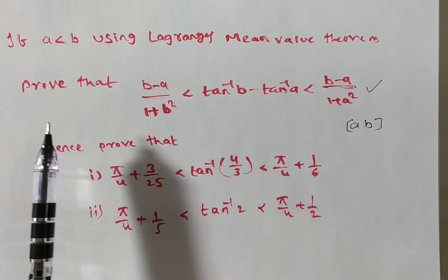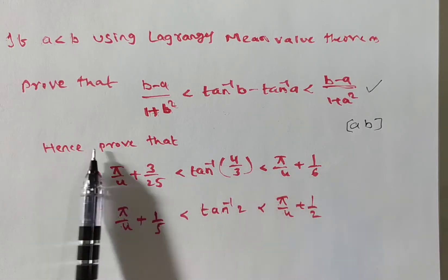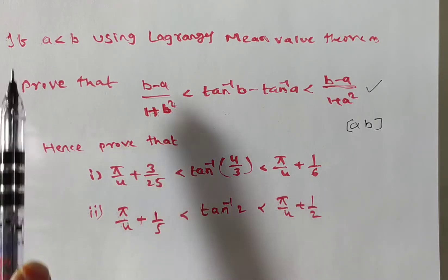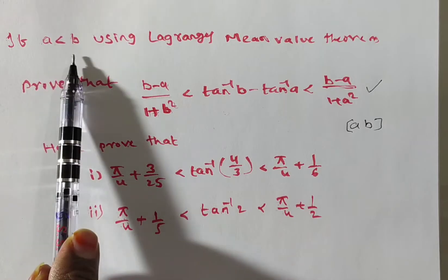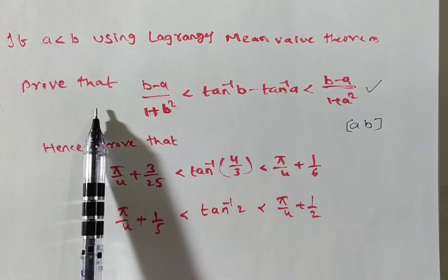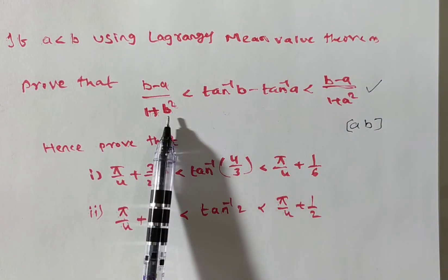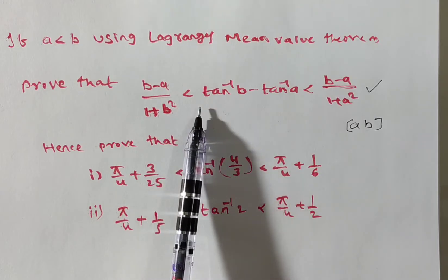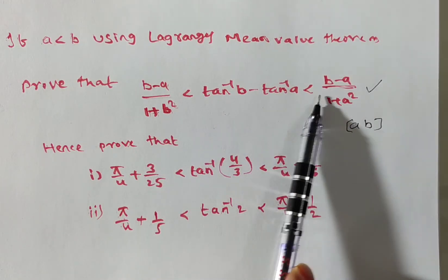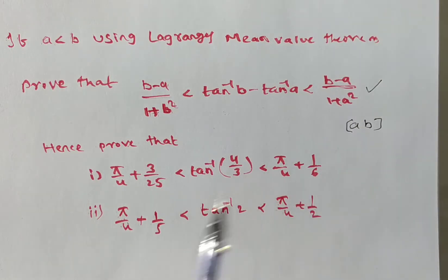In calculus, many times they ask for these types of problems, especially: if a is less than b, using Lagrange's mean value theorem, prove that (b minus a) by (1 plus b square) is less than tan inverse b minus tan inverse a, which is less than (b minus a) by (1 plus a square).